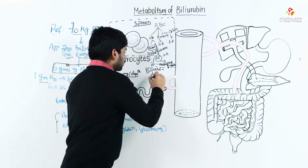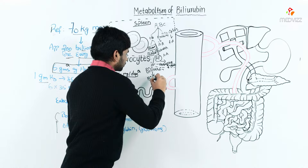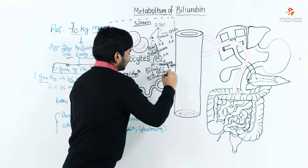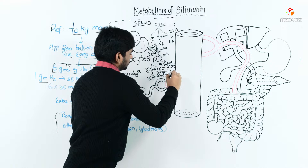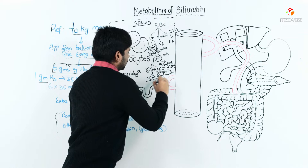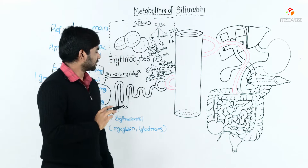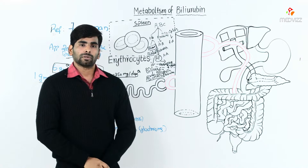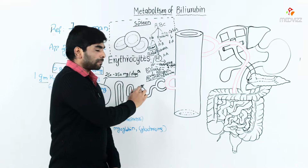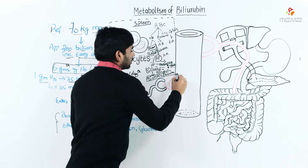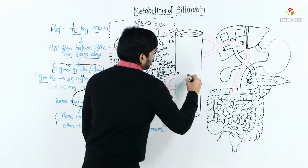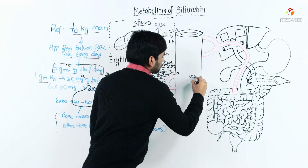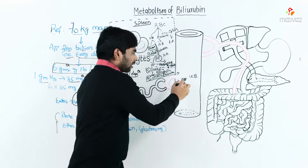Biliverdin then converts into bilirubin in the presence of biliverdin reductase. This final product, bilirubin, is then secreted. Bilirubin is a very toxic substance and must be dealt with properly.